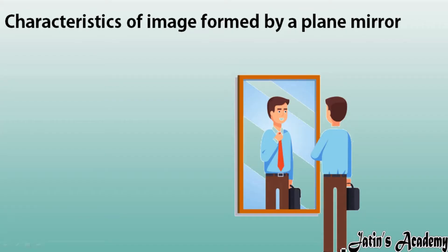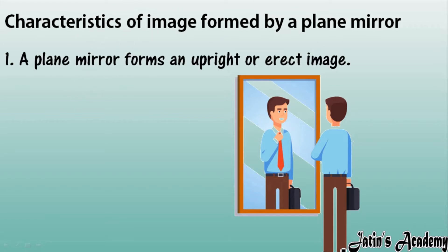Next we are having characteristics of image formed by a plane mirror — whatever mirror we are using in our house, what kind of images are formed. First, a plane mirror always forms an upright or erect image. This means the head is up here and in the image the head is also up; if your toe is down, in the image the toe is also down.